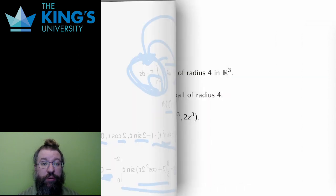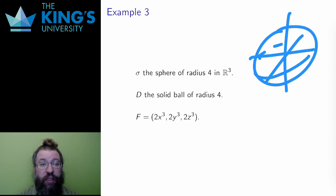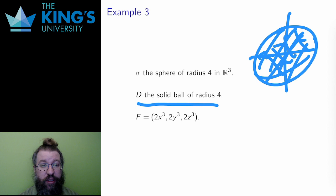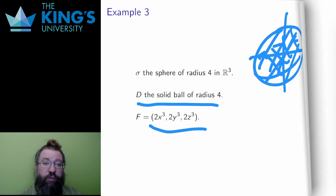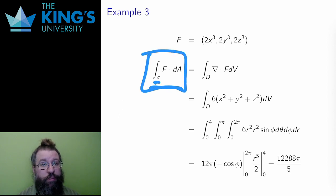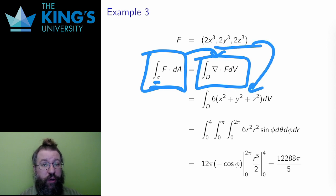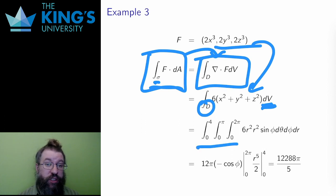Let me move on to examples that use Gauss's theorem. Gauss applies to closed surfaces and solid regions. The surface is the sphere of radius 4, which is the boundary of the solid ball of radius 4. The field is f(x,y,z) = (2x³, 2y³, 2z³). Say I want the flux of the field over the sphere. This is the left side of Gauss's theorem — any field and a closed surface — which means I can go to the right side: the divergence integrated over the solid region. The divergence of this field is 6(x² + y² + z²).